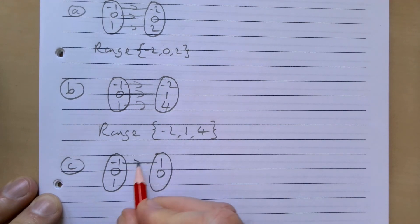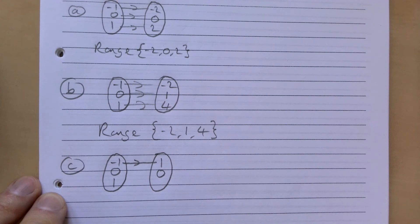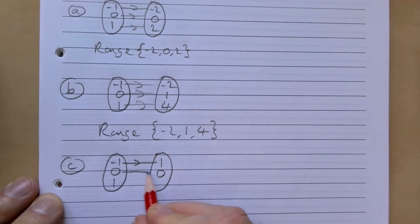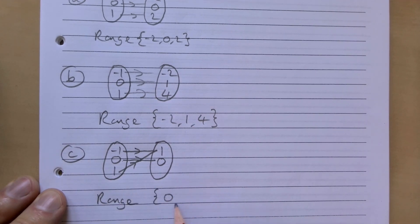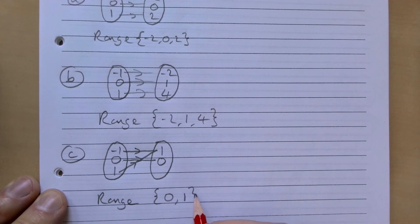So in this case, -1 maps to 1, 0 maps to 0, and 1 also maps to 1. The range is therefore {0, 1}.